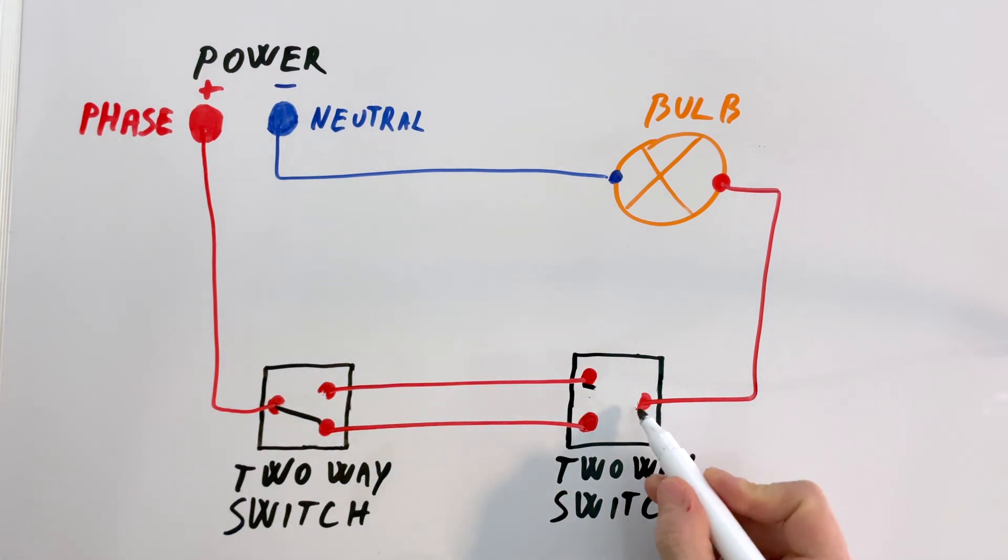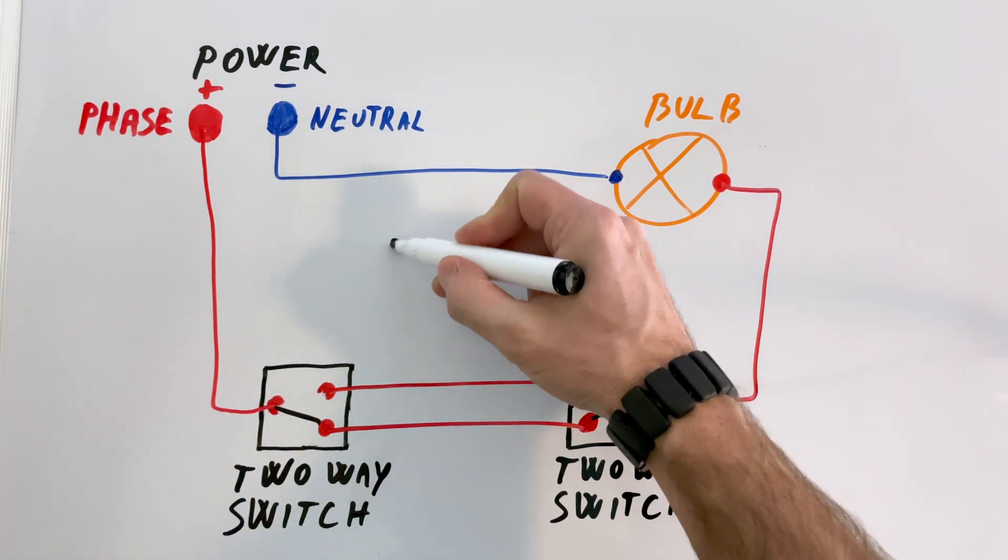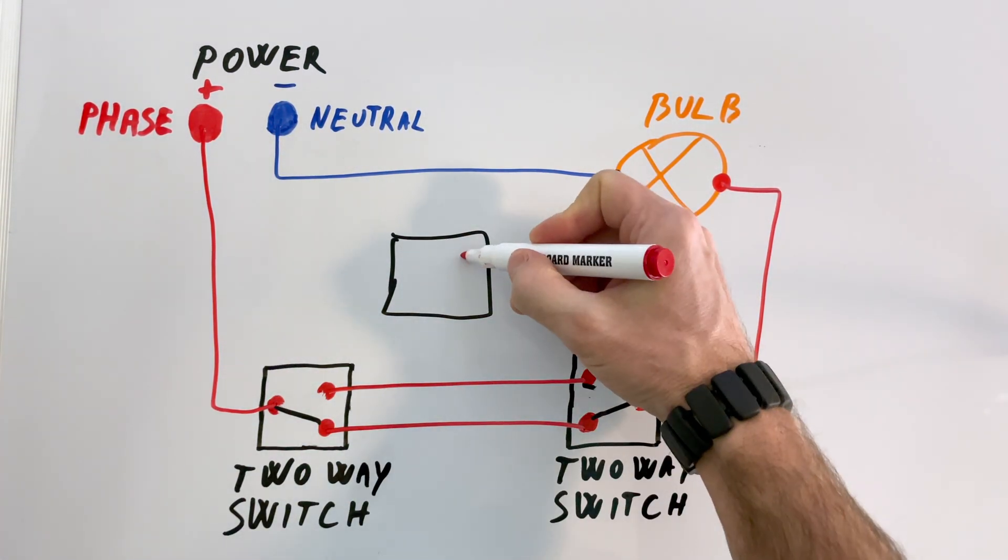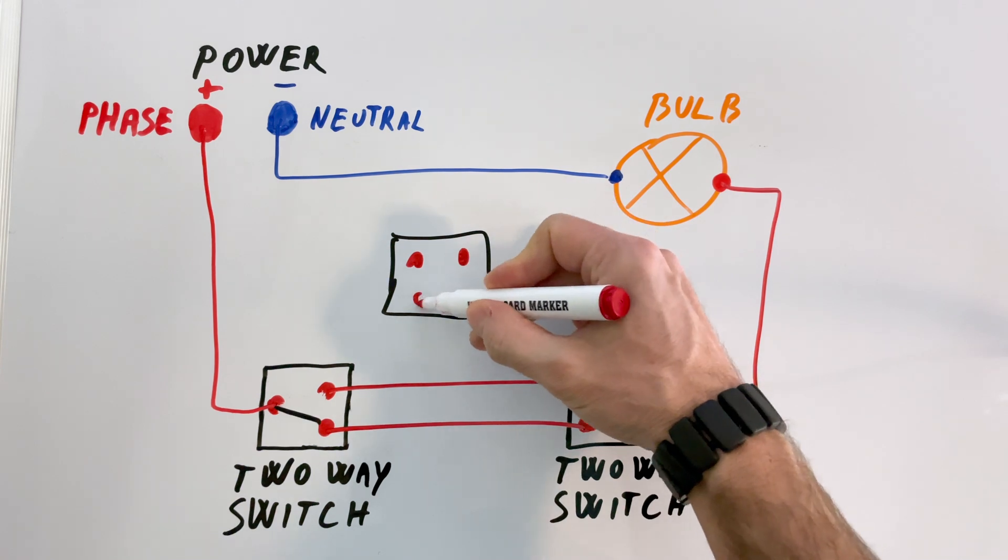I hope this explanation makes sense. In the next video, I'll show you how to add a cross switch to this diagram, allowing you to control the bulb from multiple locations.